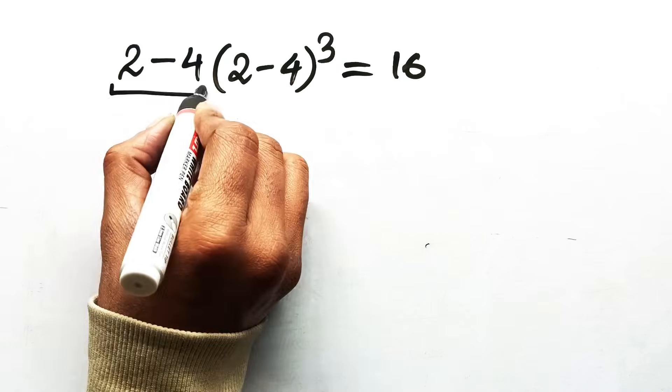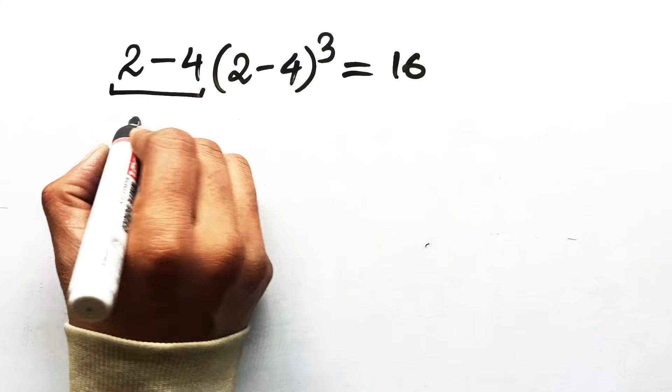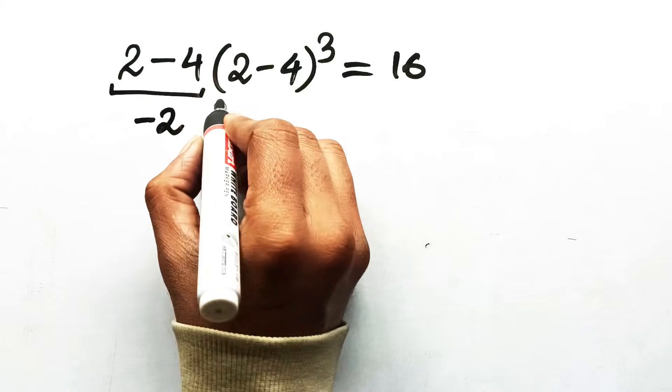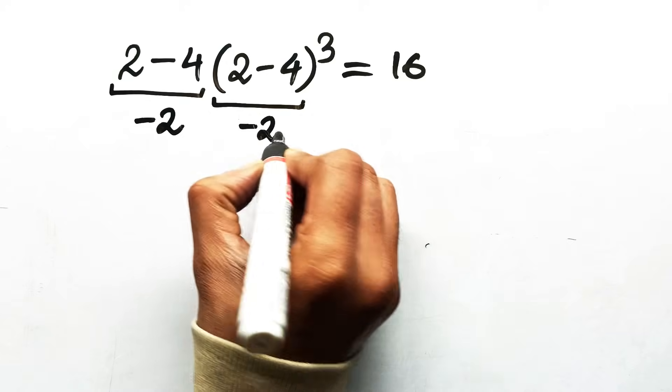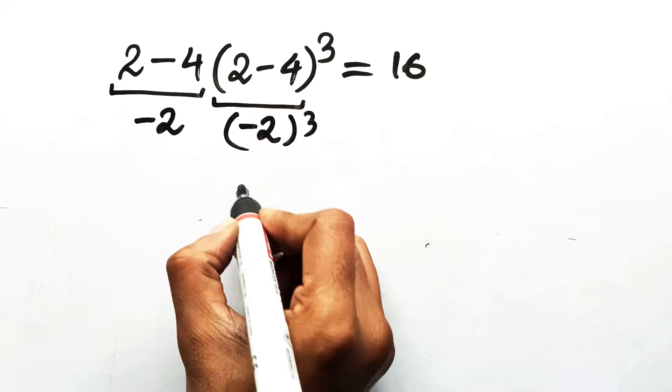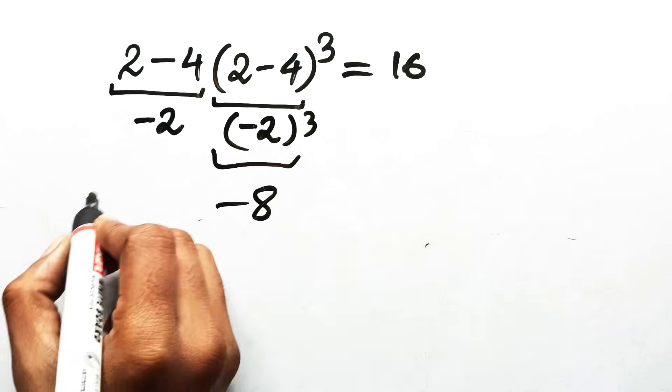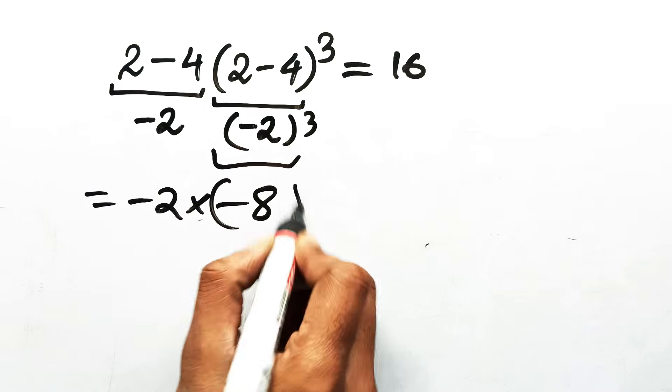They see the first two numbers and think, okay, 2 minus 4 is negative 2. Then they look inside the parentheses, 2 minus 4 is also negative 2, cube that and you get negative 8. Now multiply negative 2 by negative 8, that's 16.